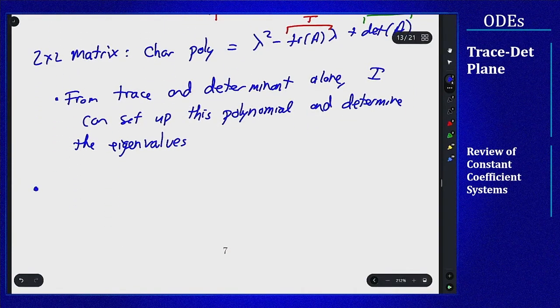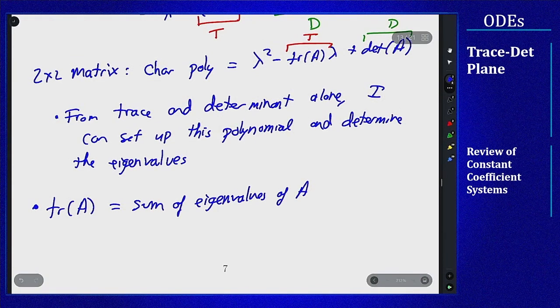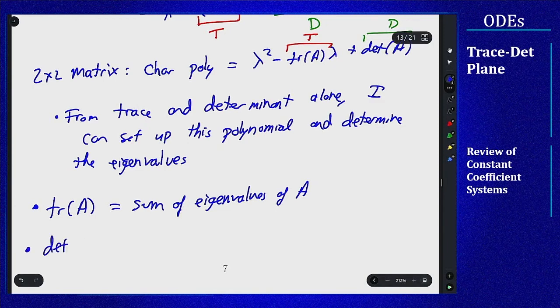So a couple other points here that are of interest that come from this fact and basic properties of quadratic polynomials and their roots is the following. Property one: the trace of a matrix A always equals the sum of the eigenvalues of the matrix. And if you think about it, if I have a quadratic that factors as (lambda minus R1) times (lambda minus R2), the middle term is exactly negative (R1 plus R2). And in a similar vein, the determinant of A equals the product of the eigenvalues of A.